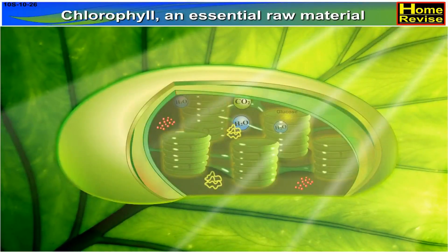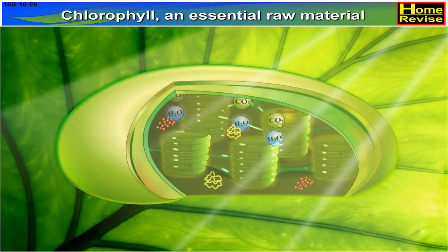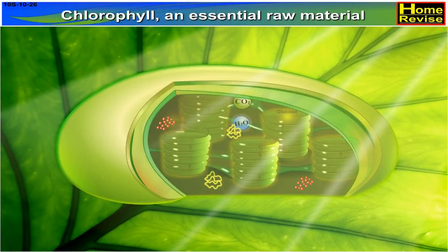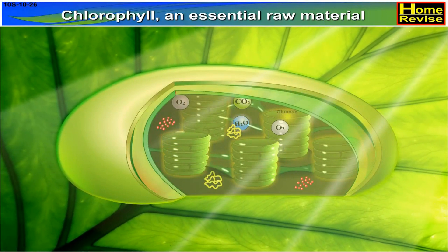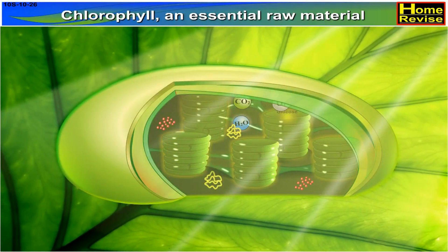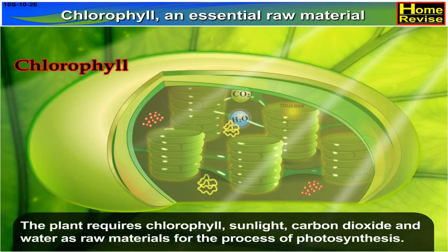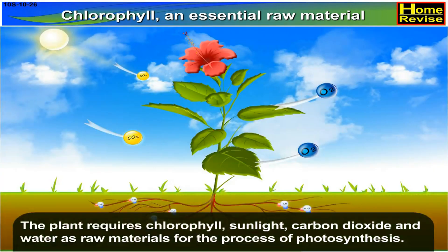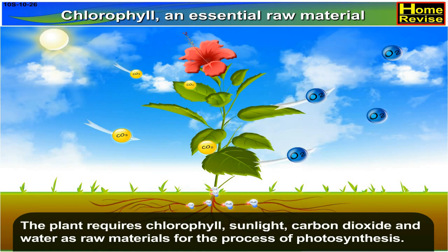Chlorophyll — an essential raw material. The plant requires chlorophyll, sunlight, carbon dioxide, and water as raw materials for the process of photosynthesis.